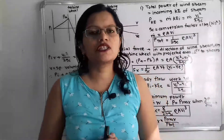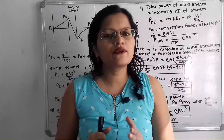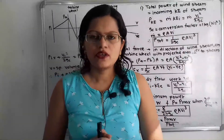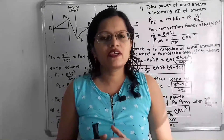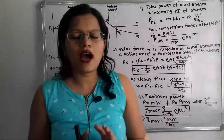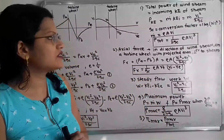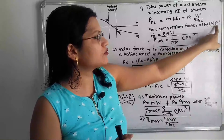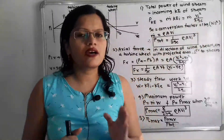We will move to the first formula — total power of wind stream. This is equal to the incoming kinetic energy of the stream, using suffix 'i'. Kinetic energy equals half mv², but since we are referring to power, instead of mass m we use mass flow rate m-dot. So the formula becomes: m-dot × vi² / (2·gc), where gc is the conversion factor with units Newton·second²/kilogram.